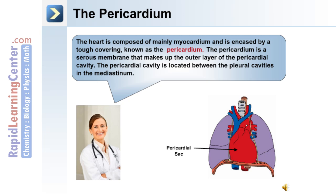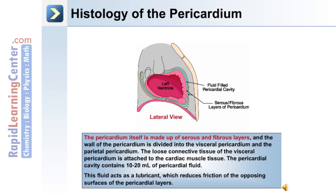The heart itself is composed mainly of myocardium, or muscle tissue, and this is encased by a tough covering known as the pericardium. The pericardium is a serous membrane that makes up the outer layer of the pericardial cavity. This cavity is located between the pleural cavities in the mediastinum. The pericardium is made up of serous and fibrous layers, and the wall of the pericardium is divided into the visceral pericardium and the parietal pericardium.